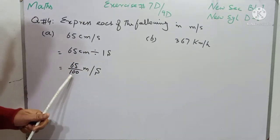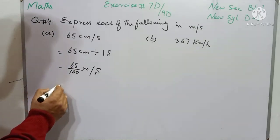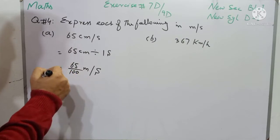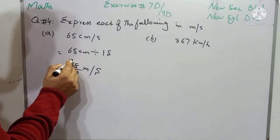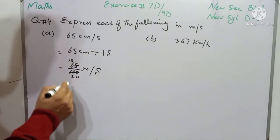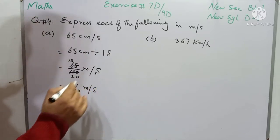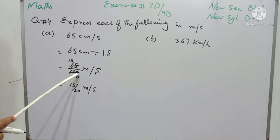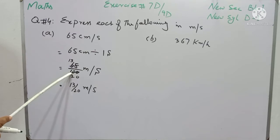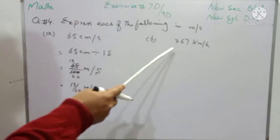We can write this number in decimal fraction as well as in common fraction. If we want to write it in common fraction, we will cancel 65 and 100 with the table of 5, giving us 13 over 20 meter per second. If you want to convert this fraction into decimal fraction, there are 2 zeros in the denominator, so our point will move 2 digits toward left, and it will be 0.65 meter per second.